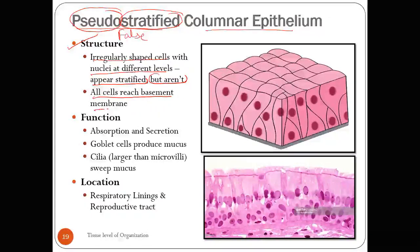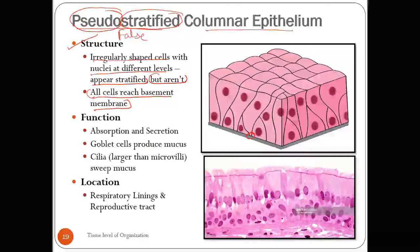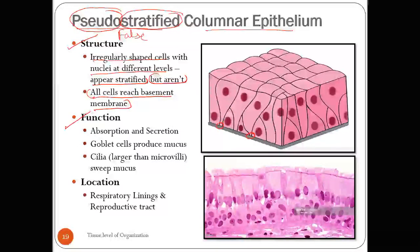It is called columnar epithelium because the cells forming it are columnar in shape. The structure consists of irregularly shaped cells with nuclei at different levels — it appears stratified but is not. Importantly, all cells reach the basement membrane; their basal surfaces are attached to it. The function is again absorption and secretion.